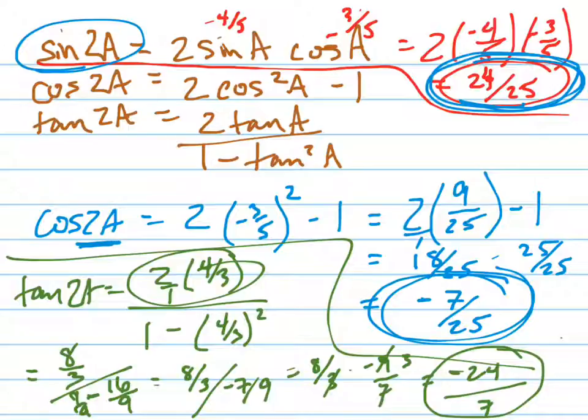Which makes sense, it should be a negative value, because it's in the second quadrant. The tangent is negative in the second quadrant. So there are your three answers for what they want based on the information that you were given.